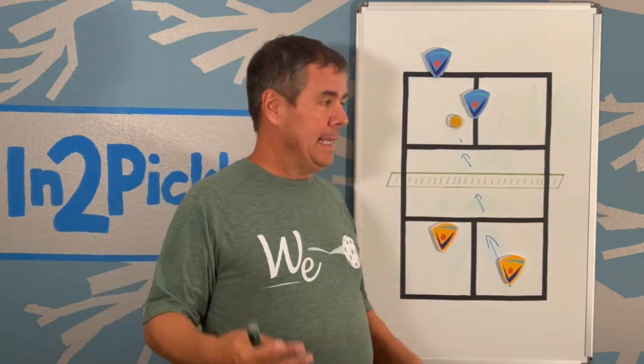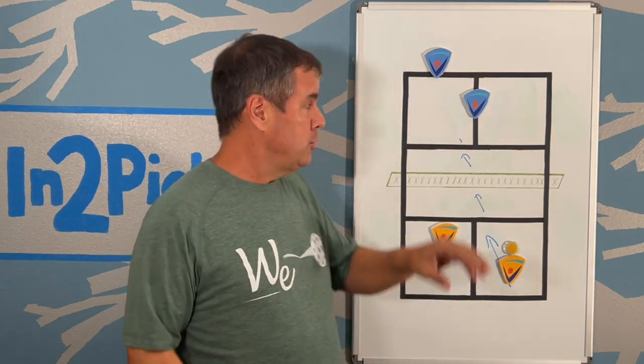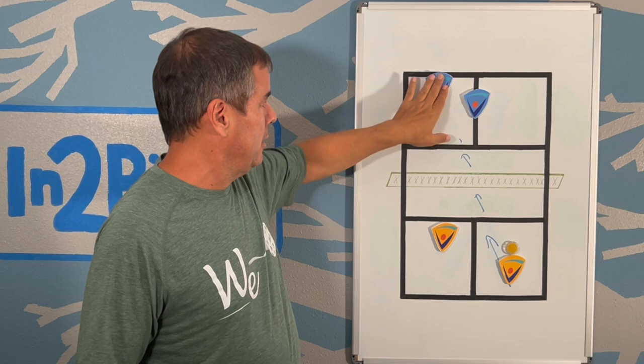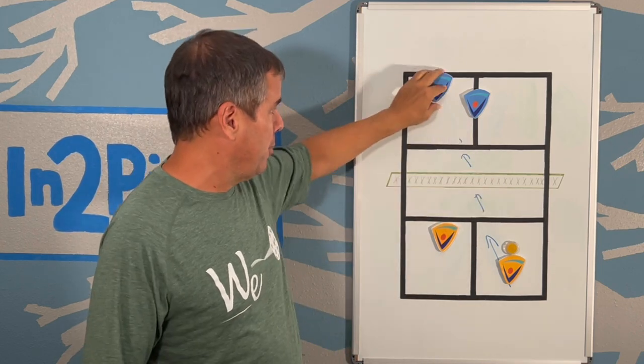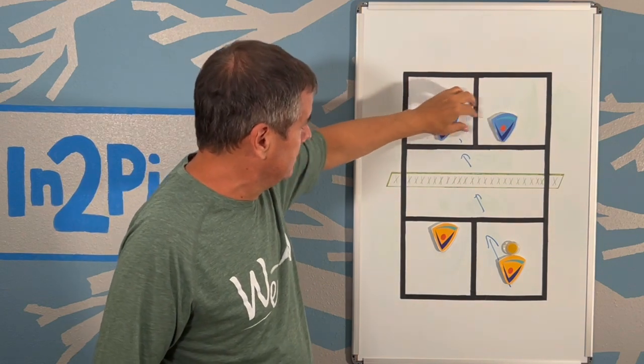So your better technique is if you take this ball and you hit it towards this player, that allows you and your partner, your partner should be moving up with you at the same time. So when you're hitting the ball, your partner should be around here. That allows you and your partner to then move up to the no volley zone like this, basically putting pressure on this player and on the ball.